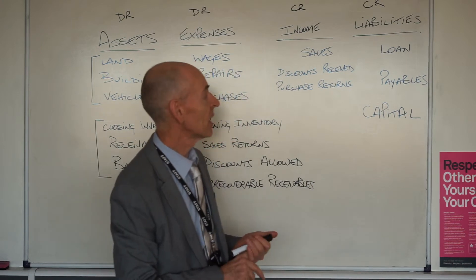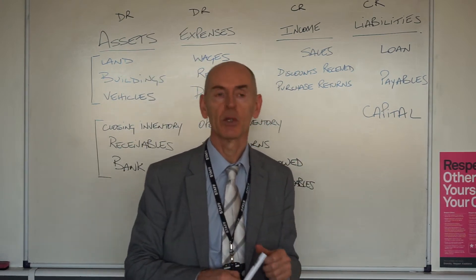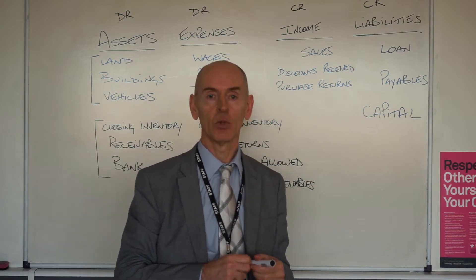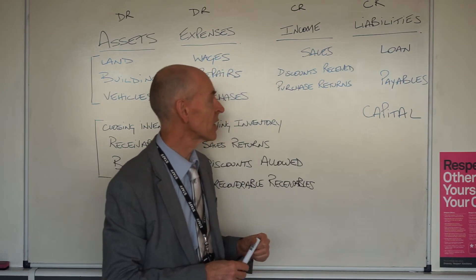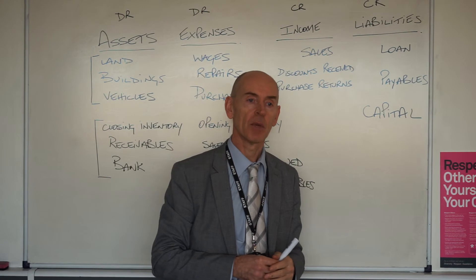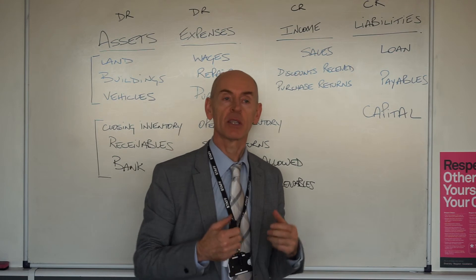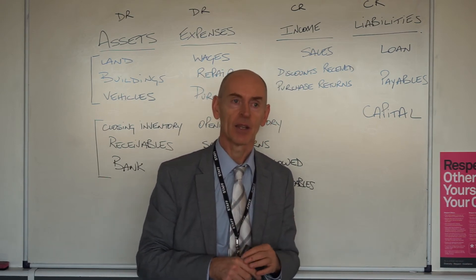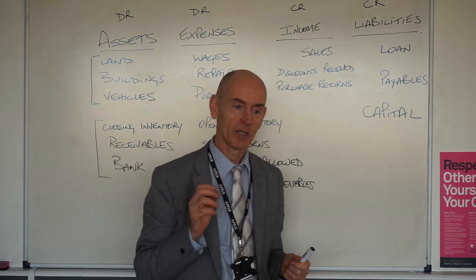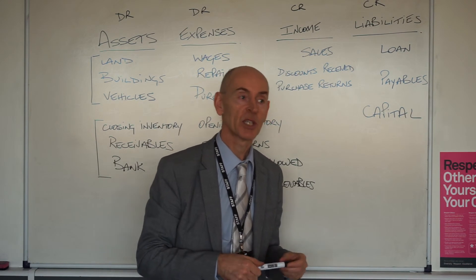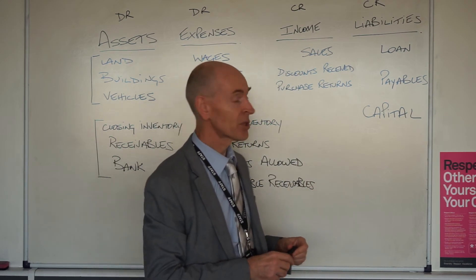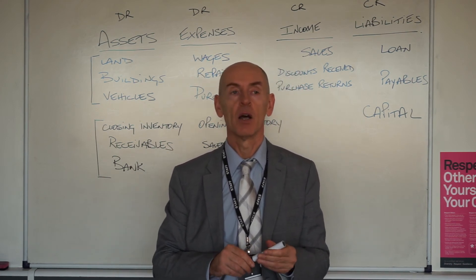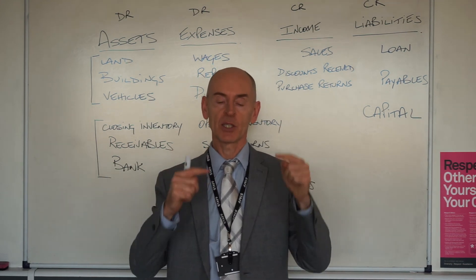Other current liabilities alongside payables include accruals — amounts we still owe for things like electricity, gas, and water. The final liability, usually separated out in financial records, is capital. Capital is the liability of the business to the owner. If the owner puts 100 pounds into the business to start it, the business owes the owner 100 pounds — that's capital. Those are the four basic constituent parts of the bookkeeping system, and the next video will show how these start to knit together.